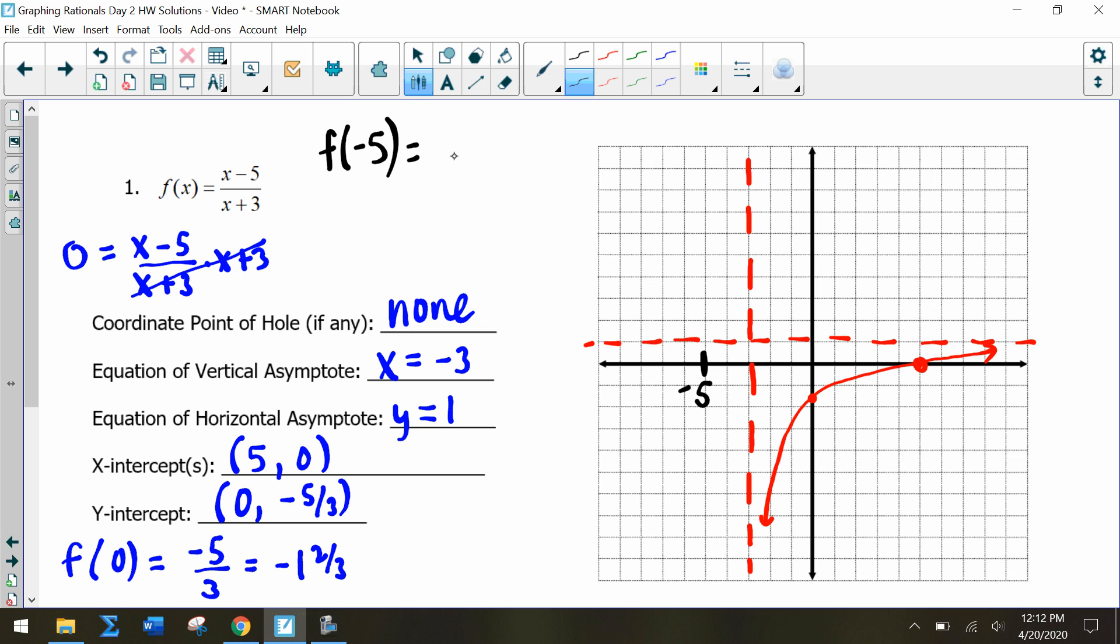We get -5 - 5, so we get -10 in our numerator. And then we have -5 + 3, so we have -2. Negative 10 divided by negative 2 is 5.